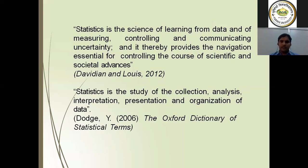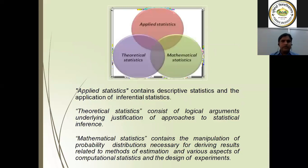These terms were already discussed in our previous class. Statistics is the science of learning from data, measuring, controlling, and communicating. We can also say statistics involves the collection, analysis, interpretation, presentation, and organization of data. Now, what are the interrelations between the three basic branches of statistics: applied statistics, theoretical statistics, and mathematical statistics?